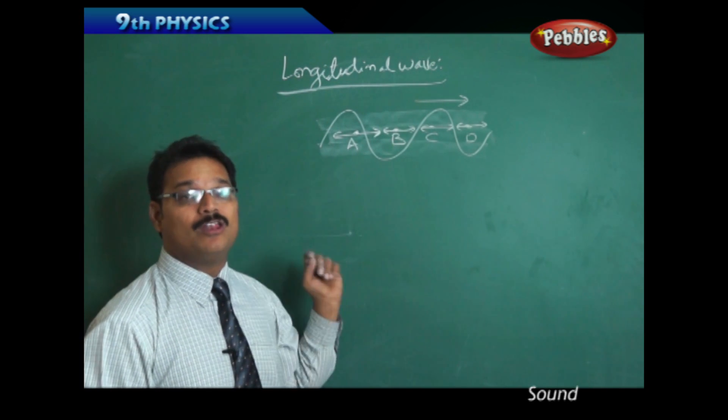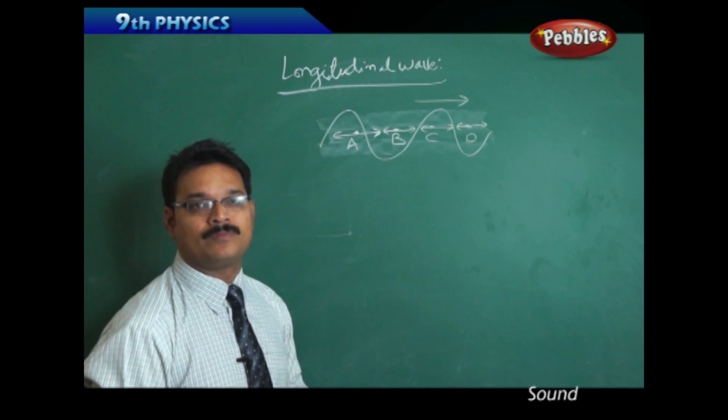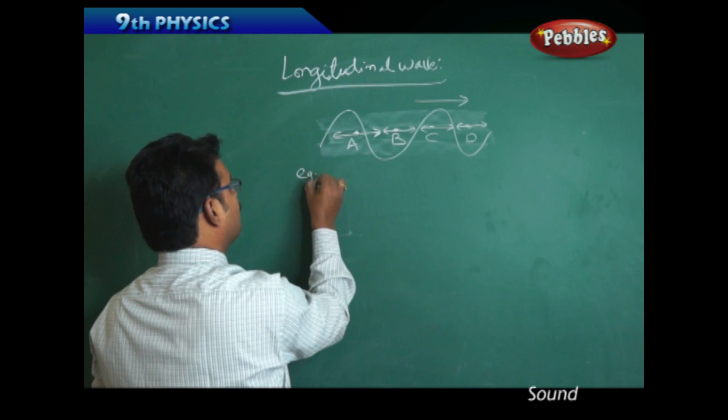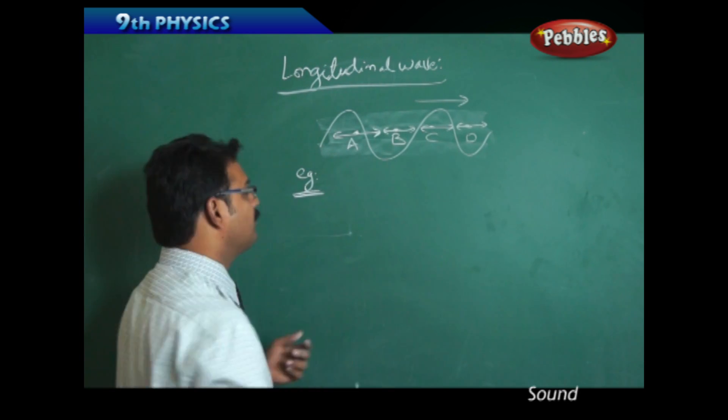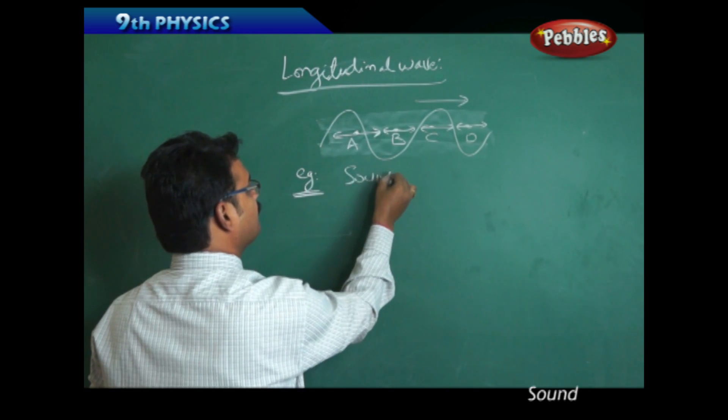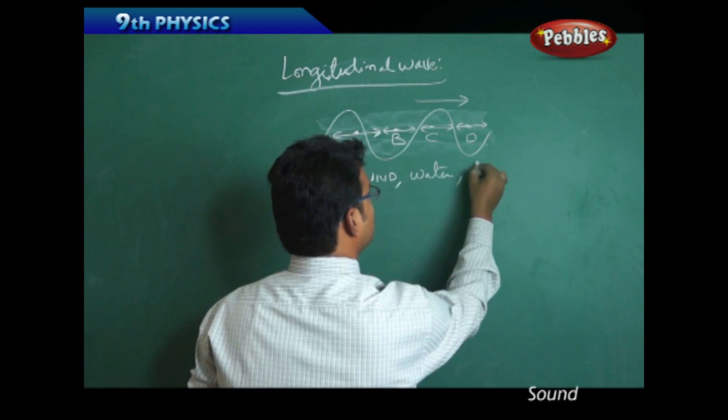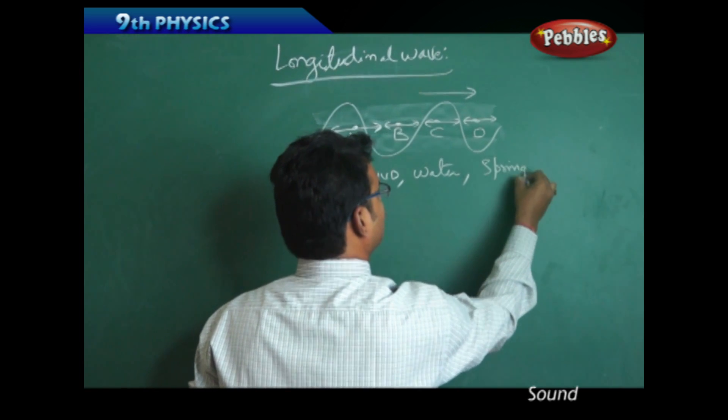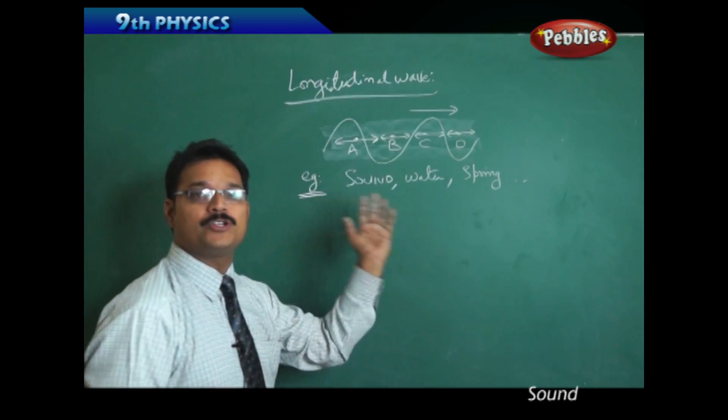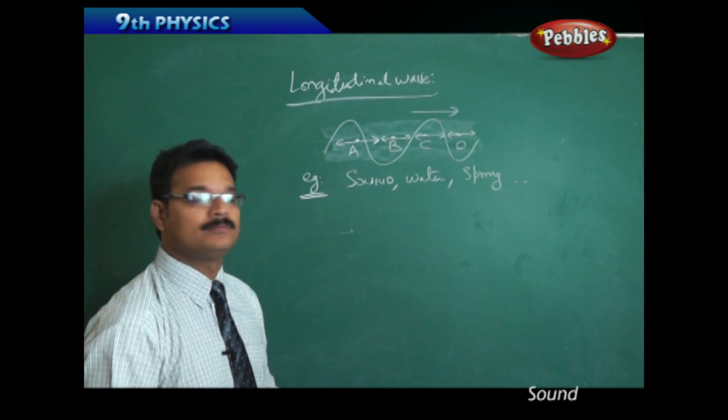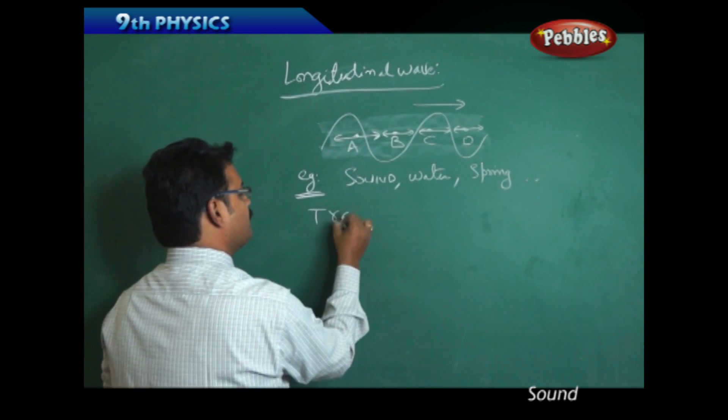...then it is called a longitudinal wave. Examples of longitudinal waves are sound waves, water waves, and waves in springs—all are longitudinal waves. Now, next one: transverse waves.